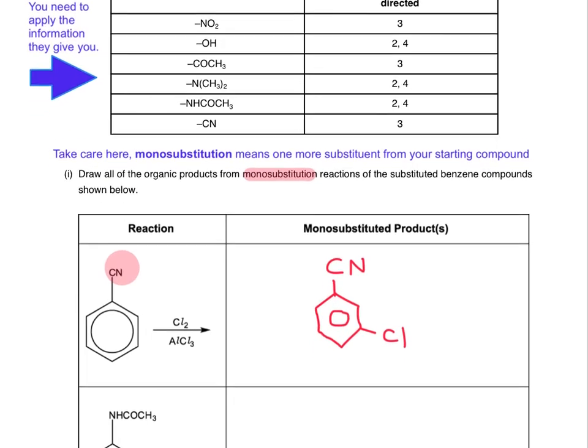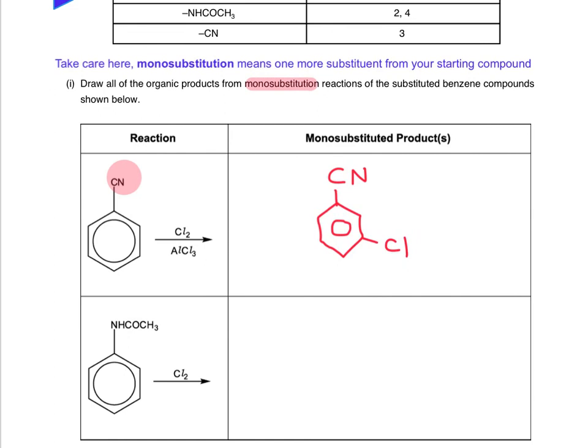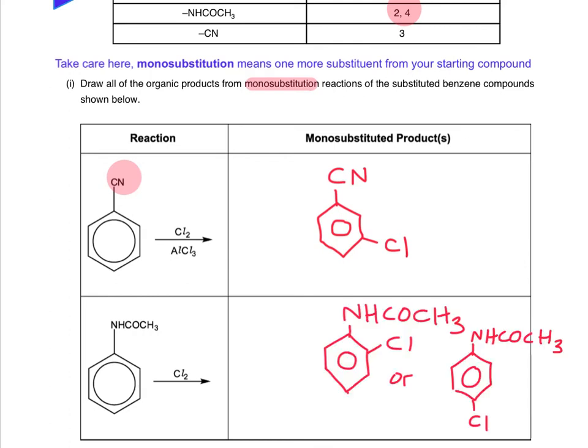Moving to the next part: the NHCOCH3 group is 2,4-directing. Thinking carefully, it says the monosubstituted product but uses the plural - so there might be more than one product. In this case there is more than one product: one is the 2-substituted and one is the 4-substituted.